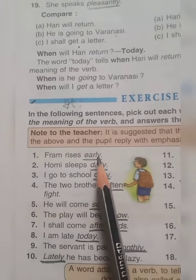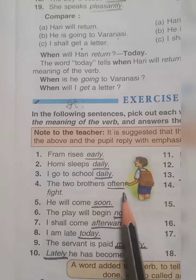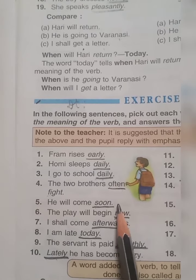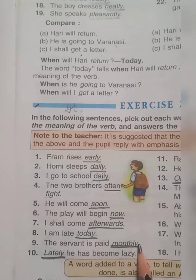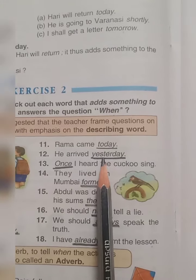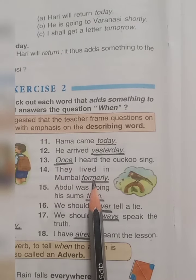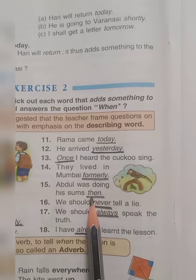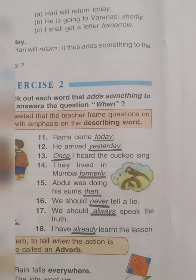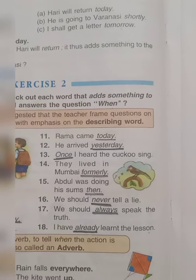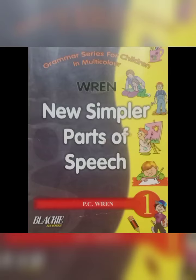Check your answers: 1) Early. 2) Daily. 3) Daily. 4) Often. 5) Soon. 6) Now. 7) Afterwards. 8) Today. 9) Monthly. 10) Lately. 11) Today. 12) Yesterday. 13) Once. 14) Formerly. 15) Then. 16) Never. 17) Always. 18) Already. All these sentences are of the question 'when.' Children, I hope you all have understood adverbs — the exercises are very easy to understand and learn. Read the sentences again and again. Thank you, children. Take care as the weather is changing — wear woolen clothes.